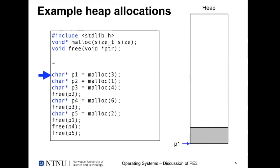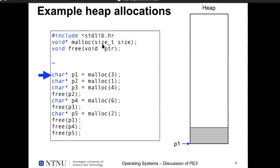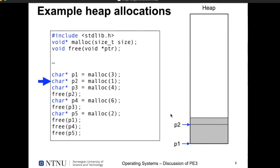Let's look at an example of heap behavior. Assuming we've written our own malloc and free functions: first we call malloc(3), allocating 3 bytes at the beginning of the heap — the returned pointer p1 points to that memory. Then we allocate 1 byte, getting pointer p2 using the next free space. Then we allocate 4 more bytes and get pointer p3.